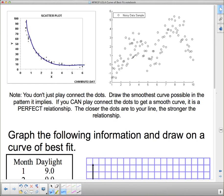And then this one over here, we've got a bunch of dipty-doos going on here. So, we'll go kind of like that. Looks like what's going on there. So, we have some above, some below. And it definitely looks like it's following a curve. Now, notice you don't just play connect the dots. Draw the smoothest curve possible in the pattern it implies. If you can play connect the dots to get a smooth curve, it is a perfect relationship. The closer the dots are to your line, the stronger the relationship.